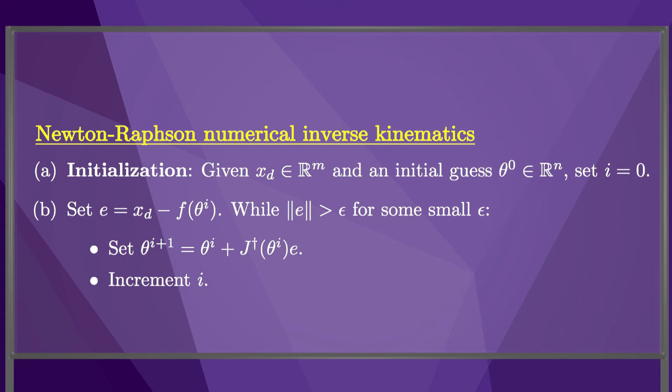We can now state the Newton-Raphson numerical inverse kinematics algorithm. Starting from an initial guess theta-zero, we calculate the end-effector error e. If it is small enough, then theta-zero is our solution. If not, then we add pseudo-inverse of J times the error e to our guess and repeat.